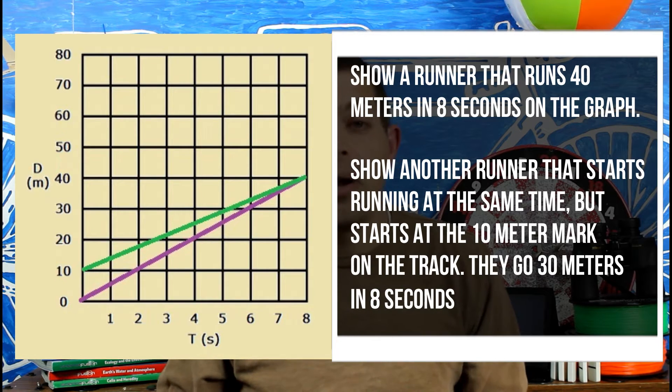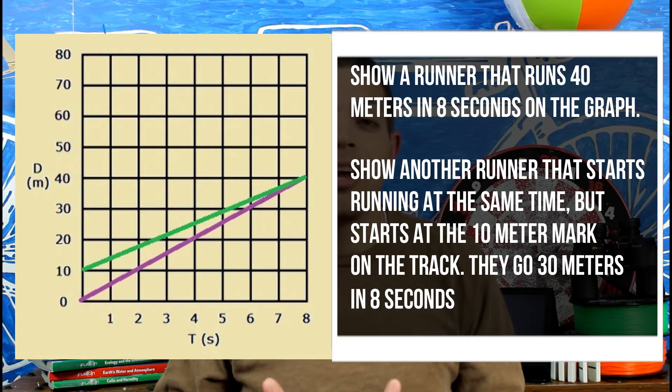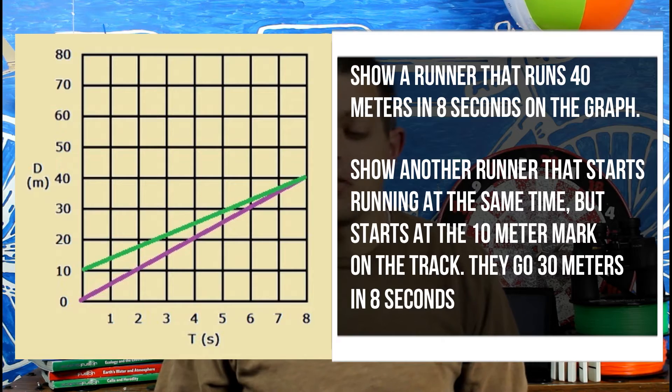So if you compare the two slopes, we see that runner A is actually having a faster speed than runner B. But hey, they end up in the same place. That's good.